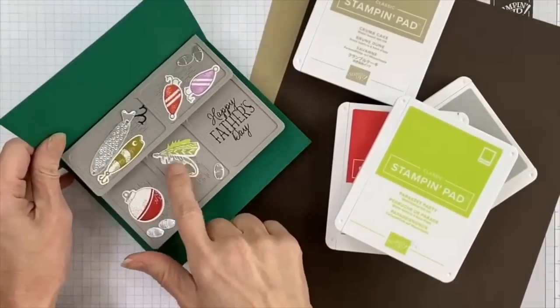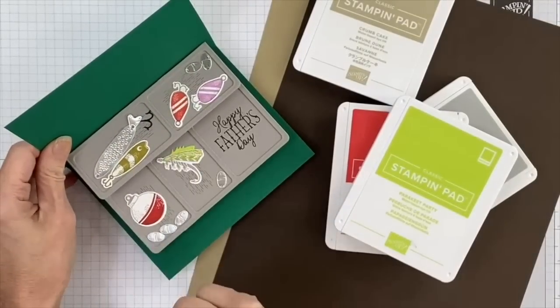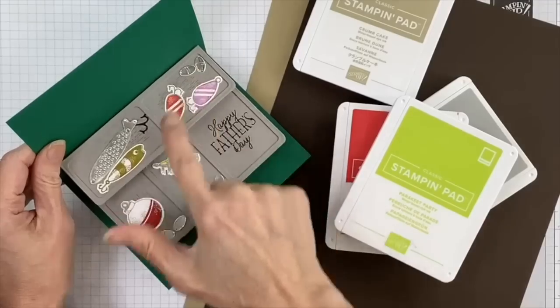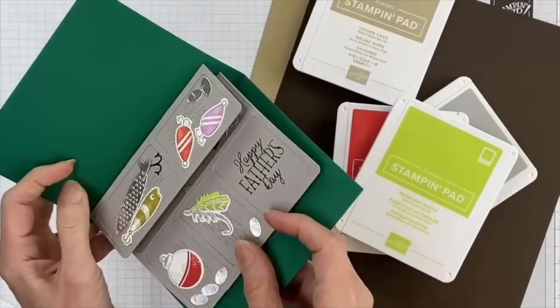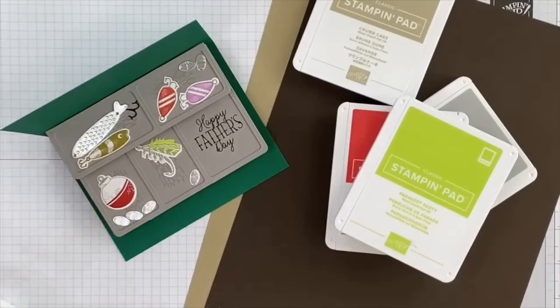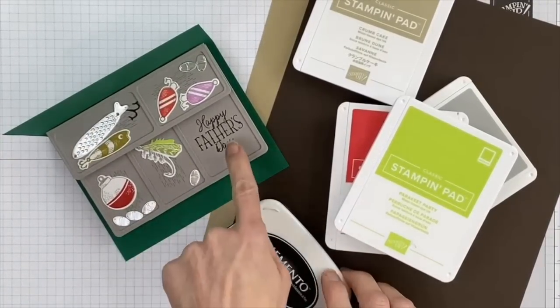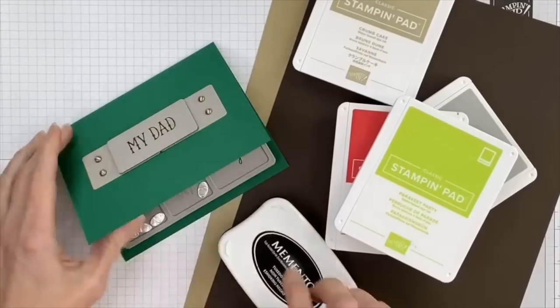As far as cardstocks, I use Basic White for all of those stamped and die-cut pieces, and then I've got Basic Black and some silver foil for some of my other pieces like my hooks and sinkers and this little piece there. I've used the Memento Tuxedo Black for my sentiment pieces right here and here.